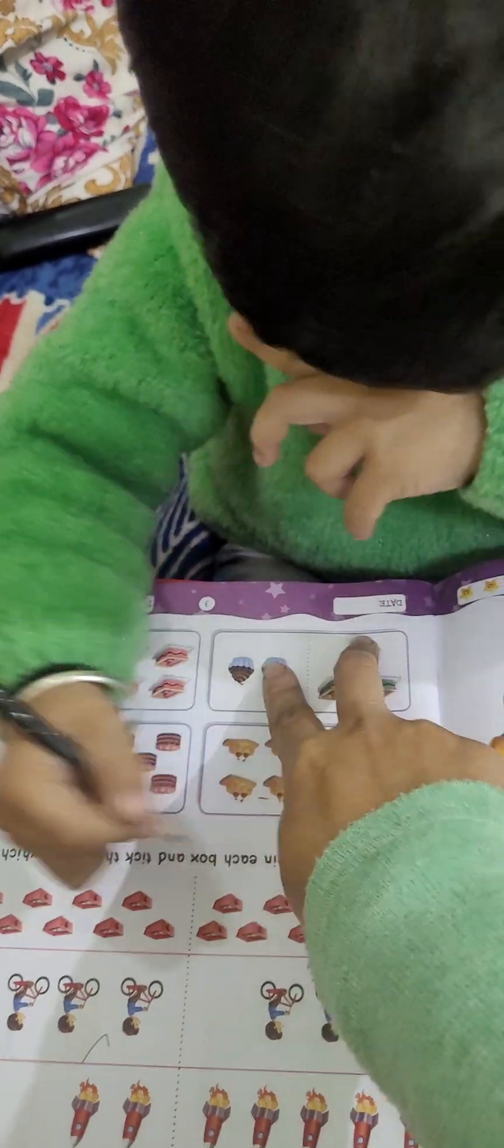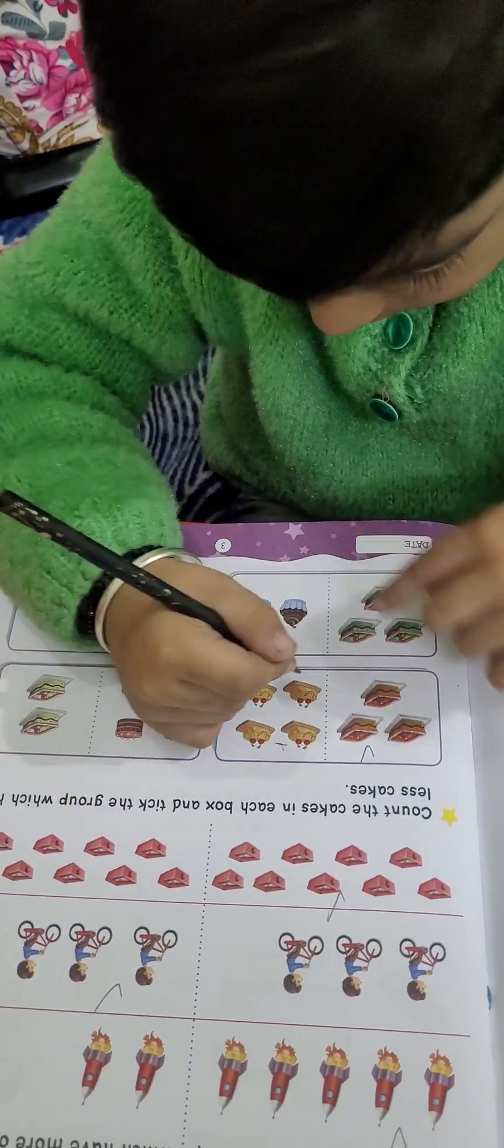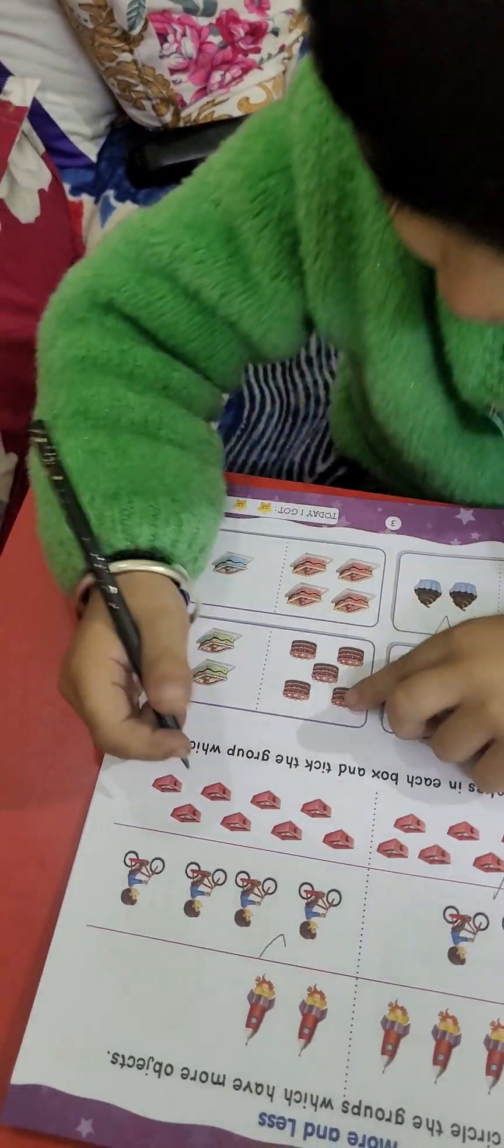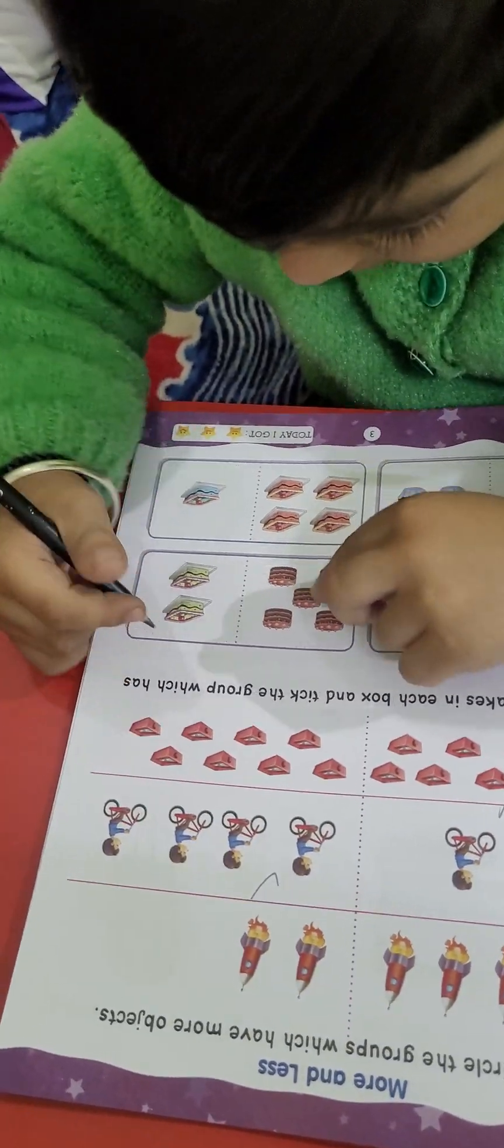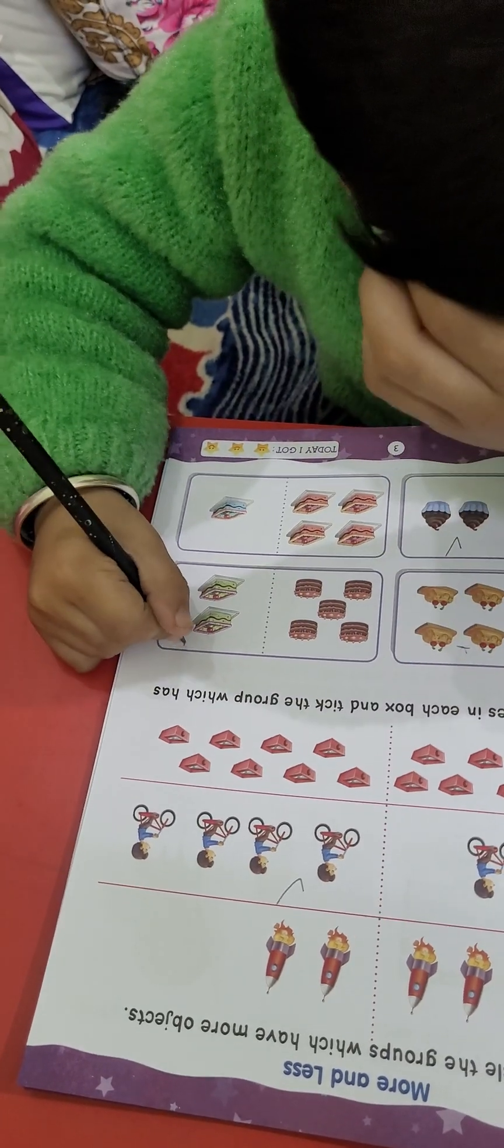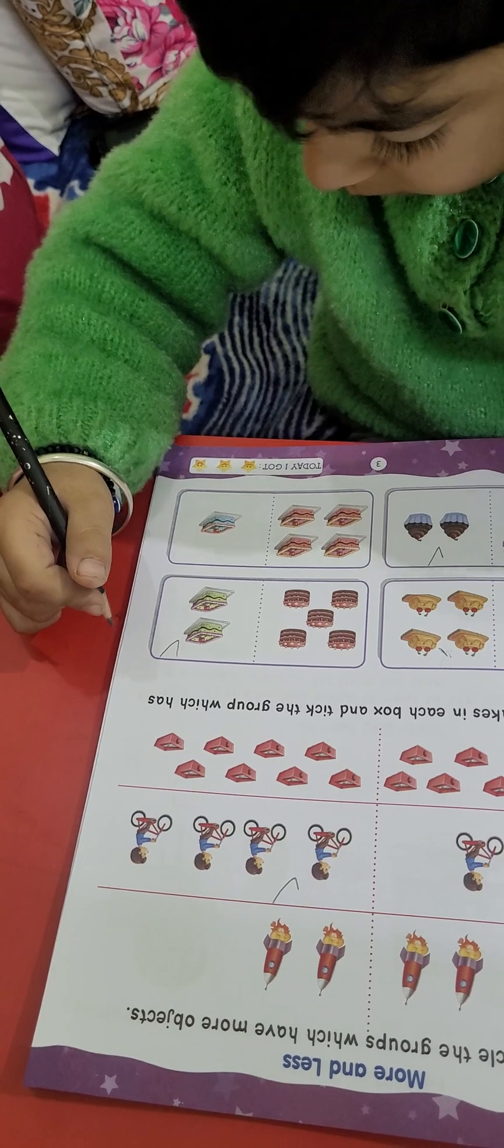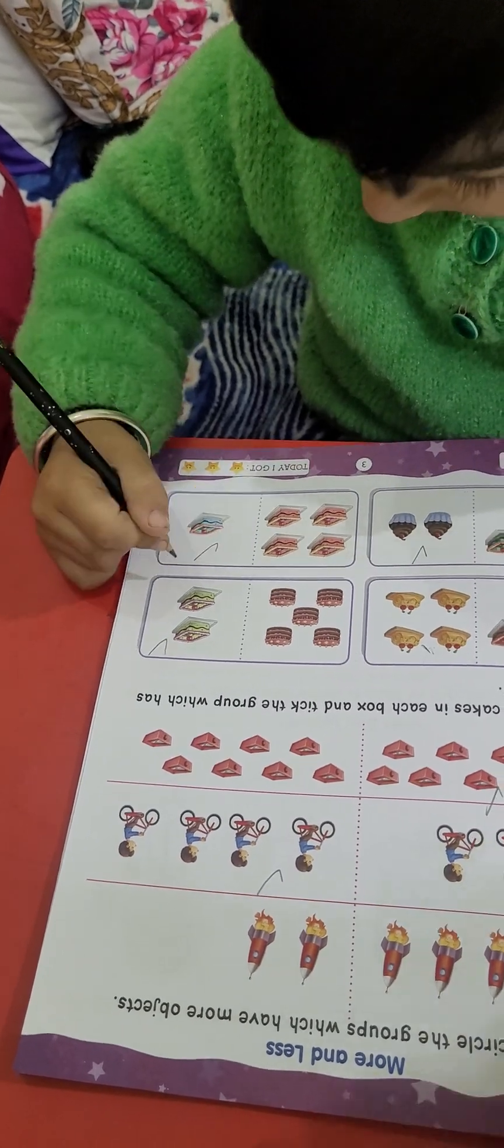Now, check in these two. 1, 2, 3. 1, 2. Very nice. Now, do this. 1, 2, 3, 4, 5. 1, 2. 1, 2, 3, 4. 1. Very nice.